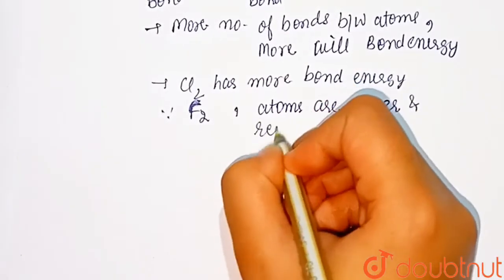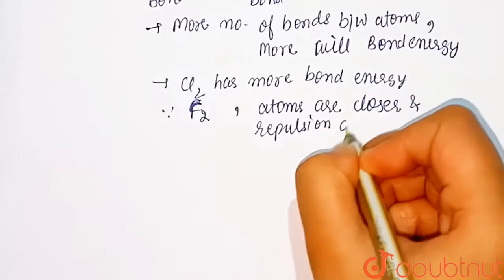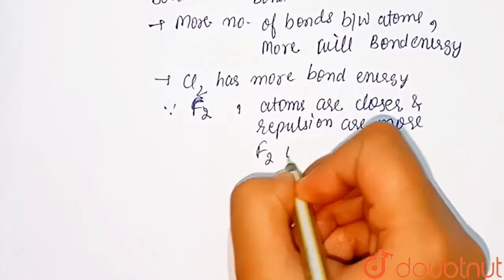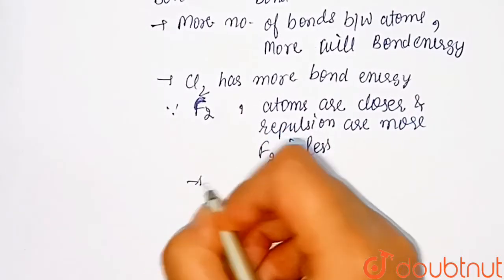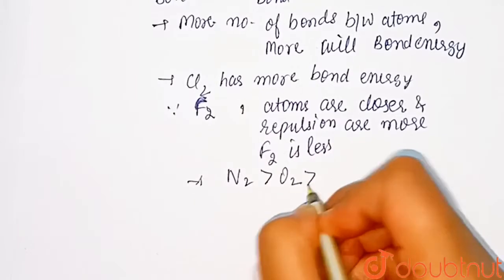and repulsion is more, so bond energy of F2 is less. The order is N2, O2, Cl2, and F2. So option two is the correct answer.